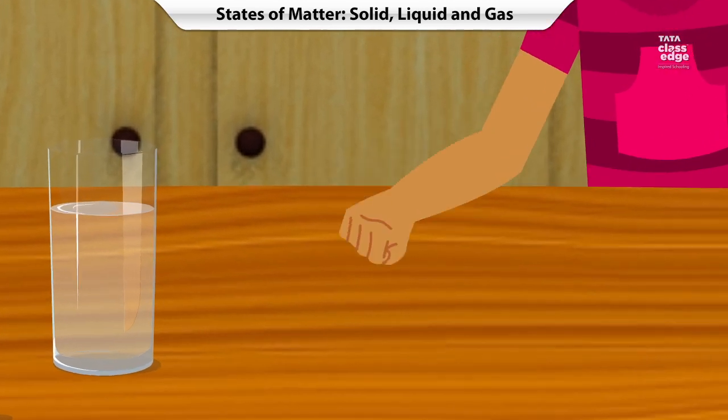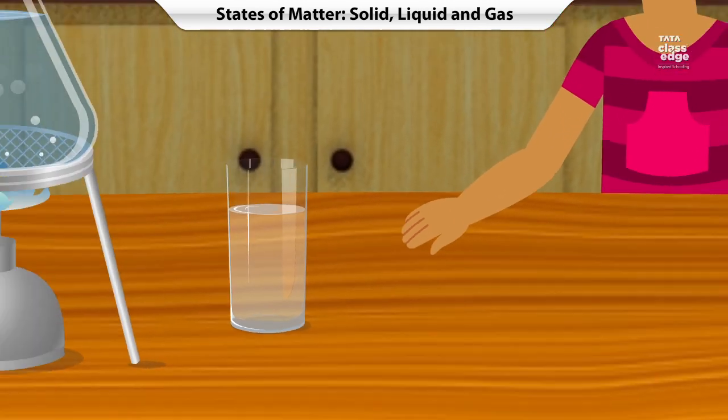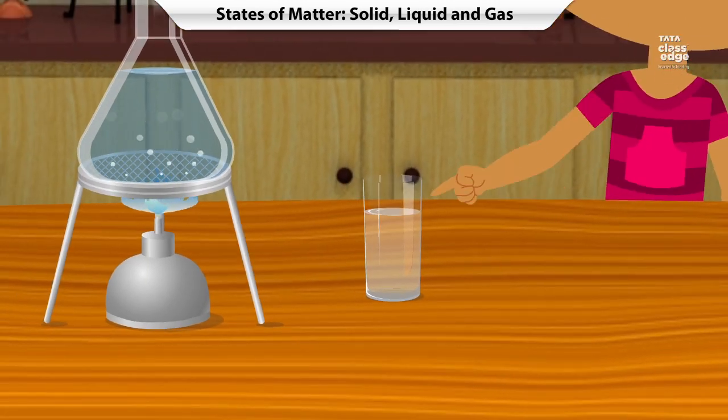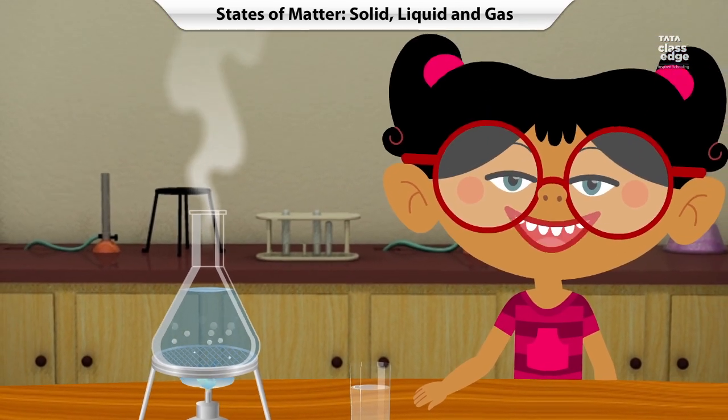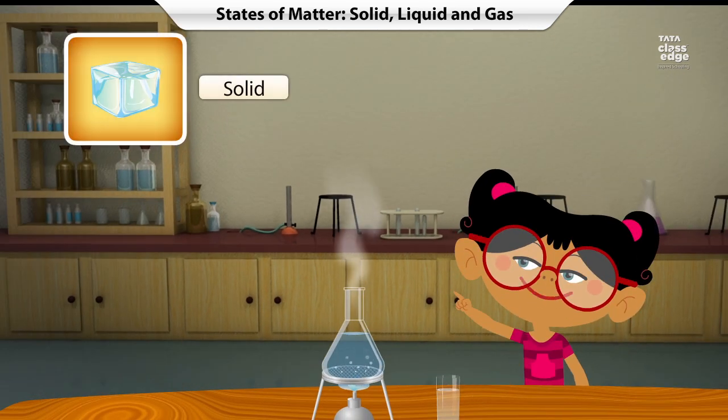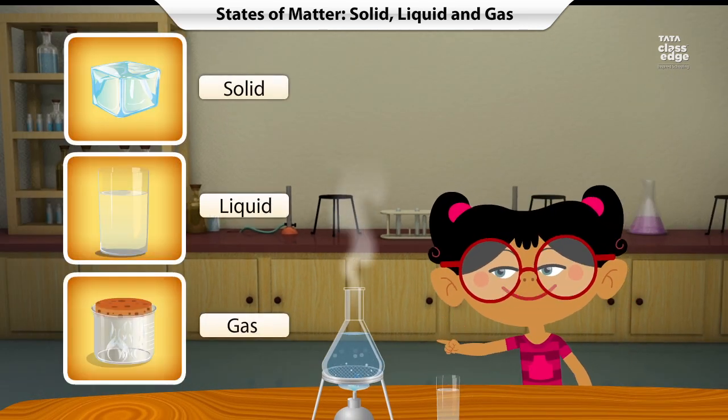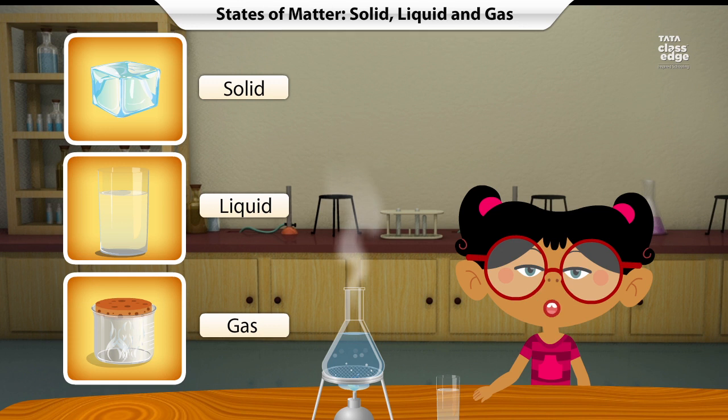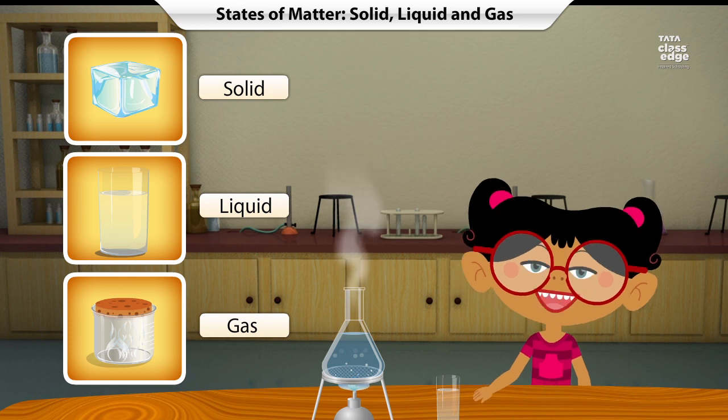Look around you. That's a solid, that's a liquid, and that's a gas. Matter commonly exists in three states: solid, liquid, and gas. And we can change matter from one state to another. Let's see how.